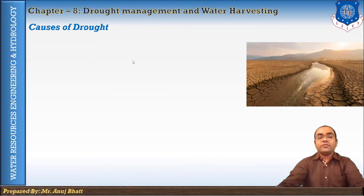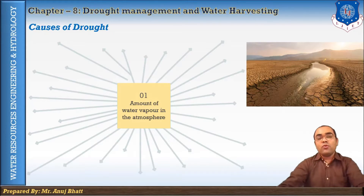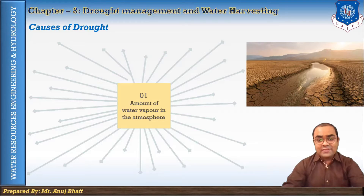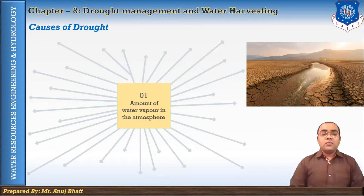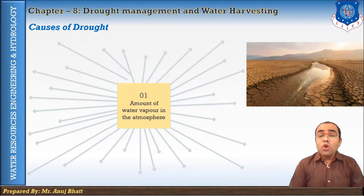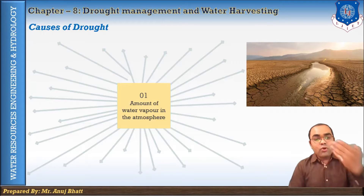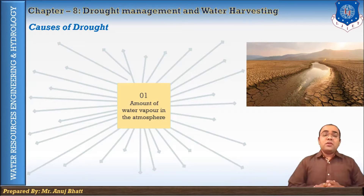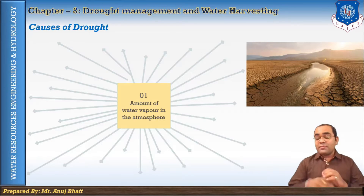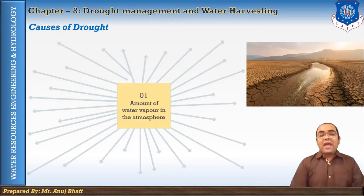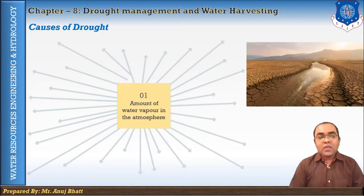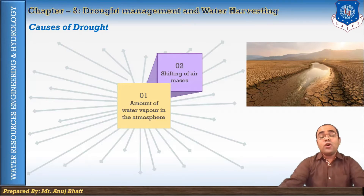Now we will discuss the causes of drought. The first is the amount of water vapor in the atmosphere, which is the most important cause of drought as it creates precipitation. More rain, sleet, hail, and snow can occur where there are moist low-pressure air systems. If there is an above-average presence of dry high pressure, then less moisture is available to produce precipitation, because dry high-pressure air systems cannot hold as much water vapor.